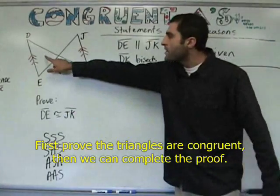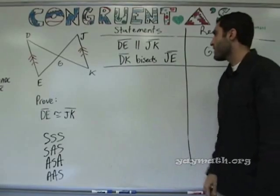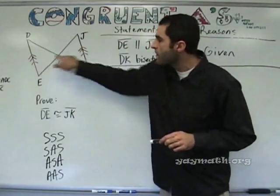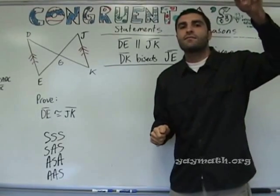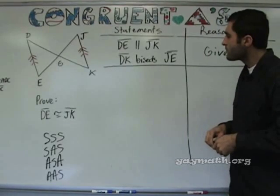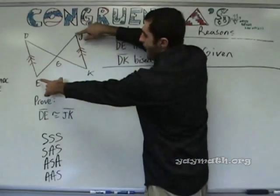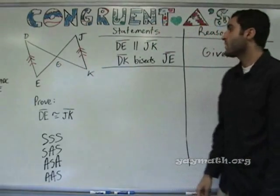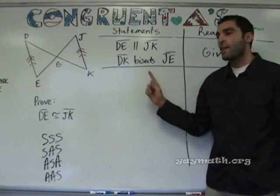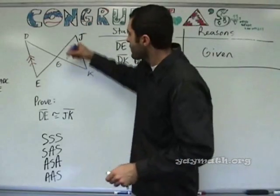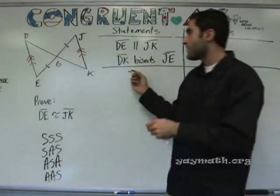Here we have this triangle and this triangle. We have parallel lines marked, and DK bisects JE. Suggestions for how to prove congruence? EG is congruent to GJ — by definition of bisecting. Correct. The segment JE is bisected, so if JE is cut in half, that means this piece is congruent to that piece. How did you phrase it? EG is congruent to GJ — definition of bisector.